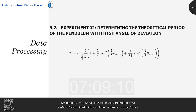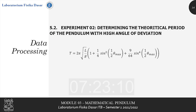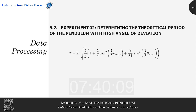After acquiring the gravitational acceleration for each mass variation, we move to experiment number two: determining the theoretical period of the pendulum with a high angle of deviation. We apply the correcting-factor equation stated earlier. Here, t0 = 2π√(l/g), where g is the value found in experiment number one.